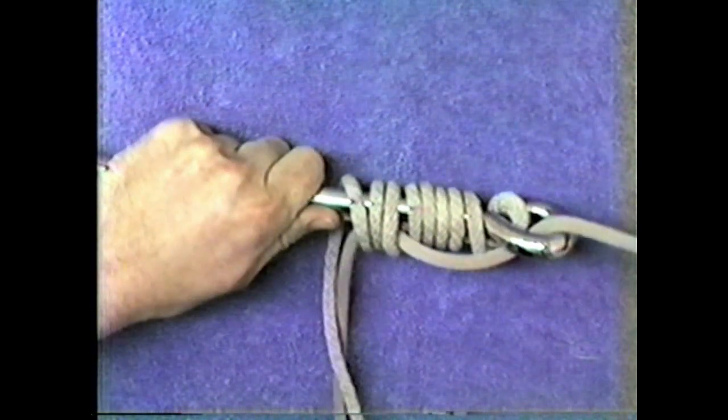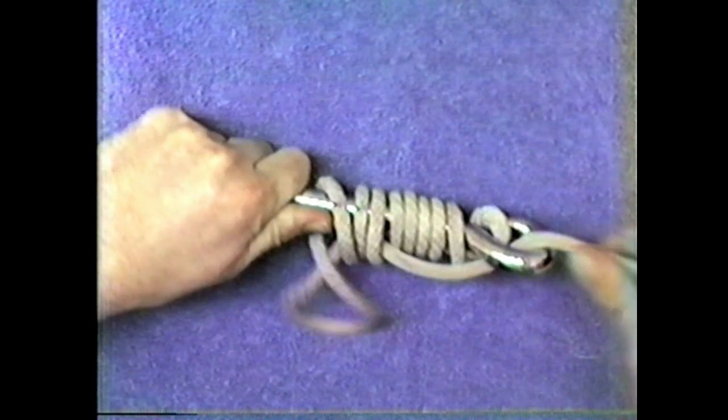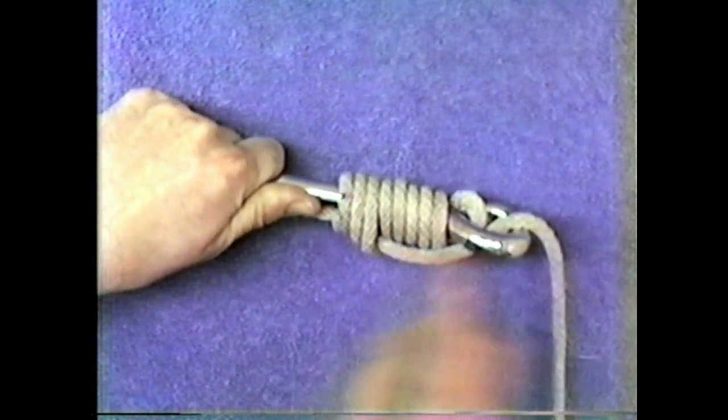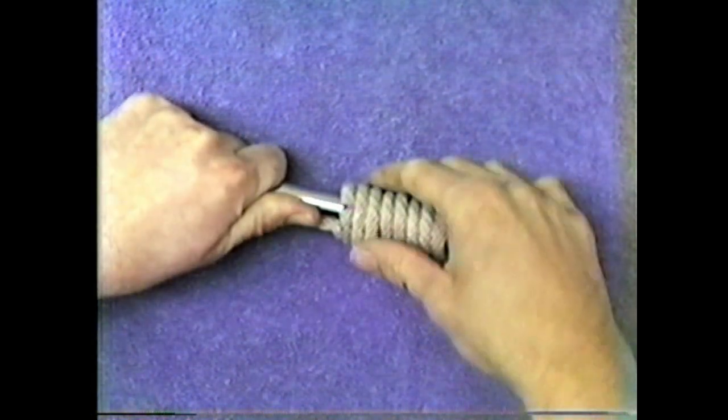Now, when you pull this tight, she'll come through nice and easy. Now one of the biggest mistakes guys make is when they tie knots, they cinch them down. Don't. This is a bumper tie.